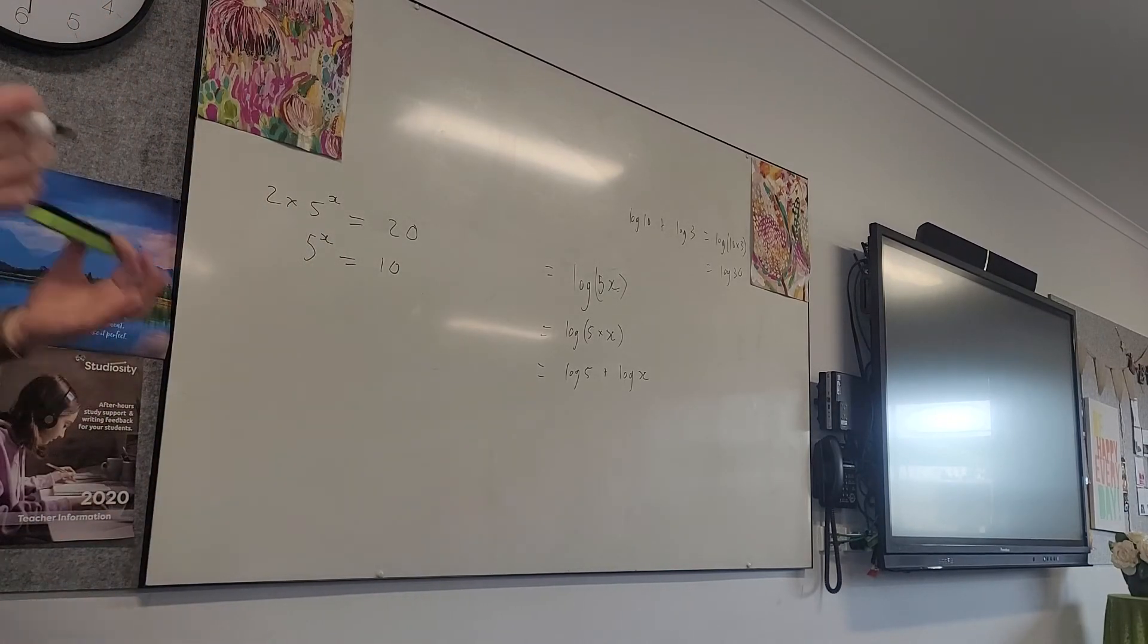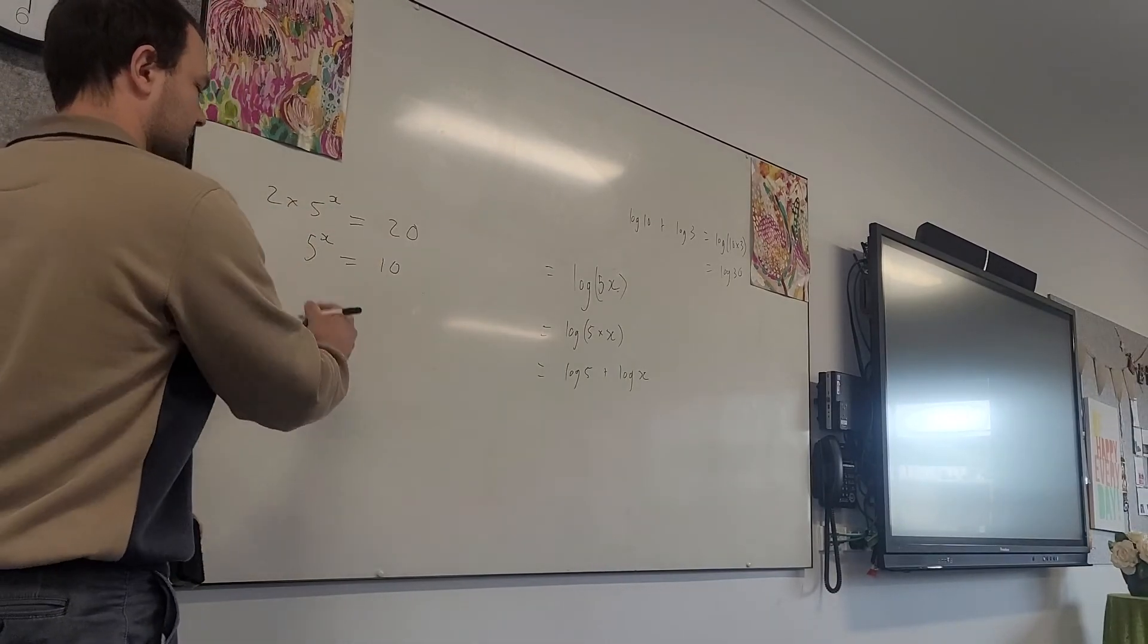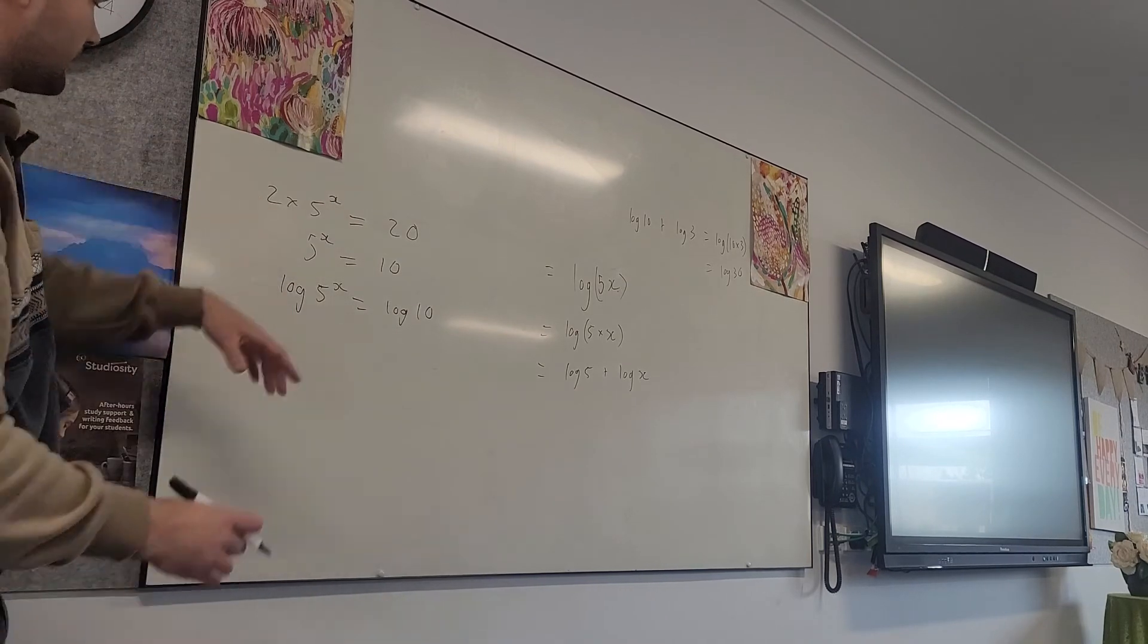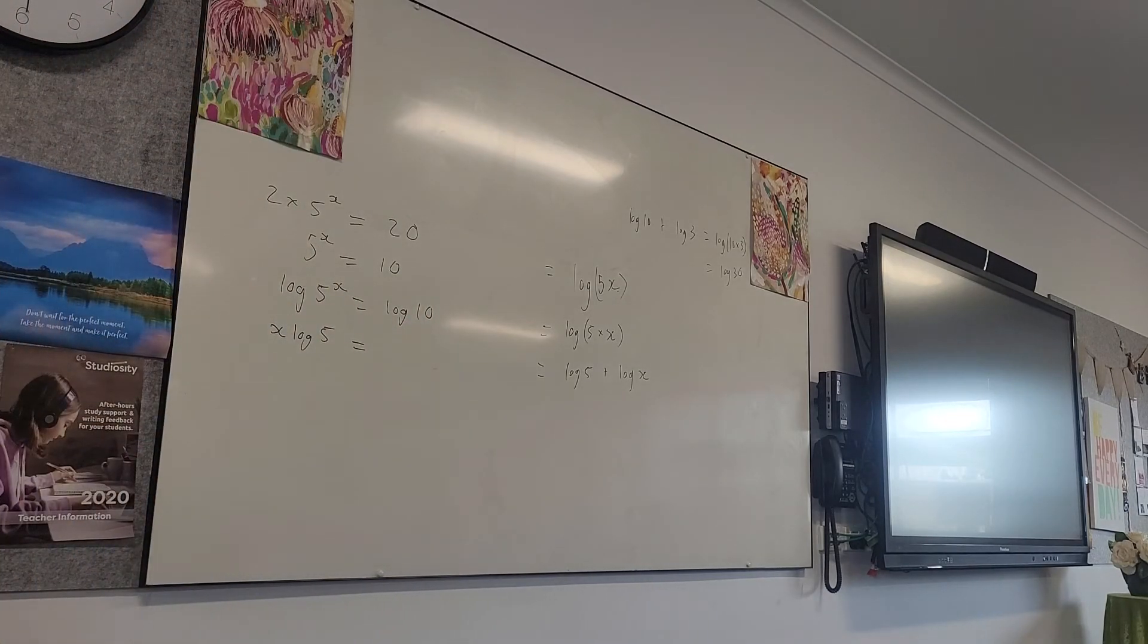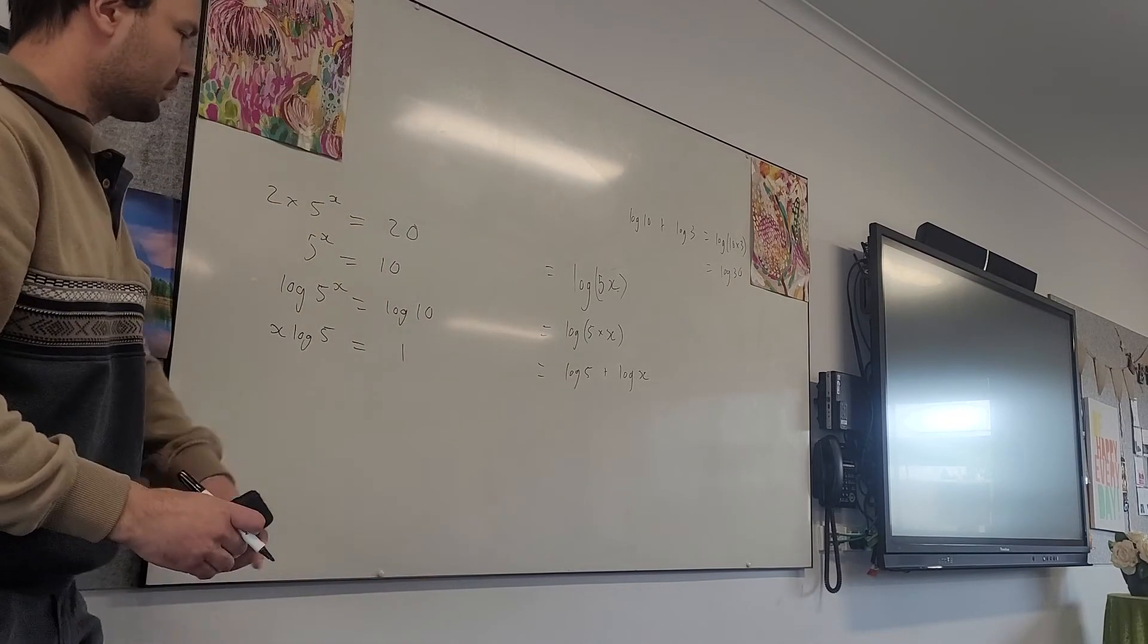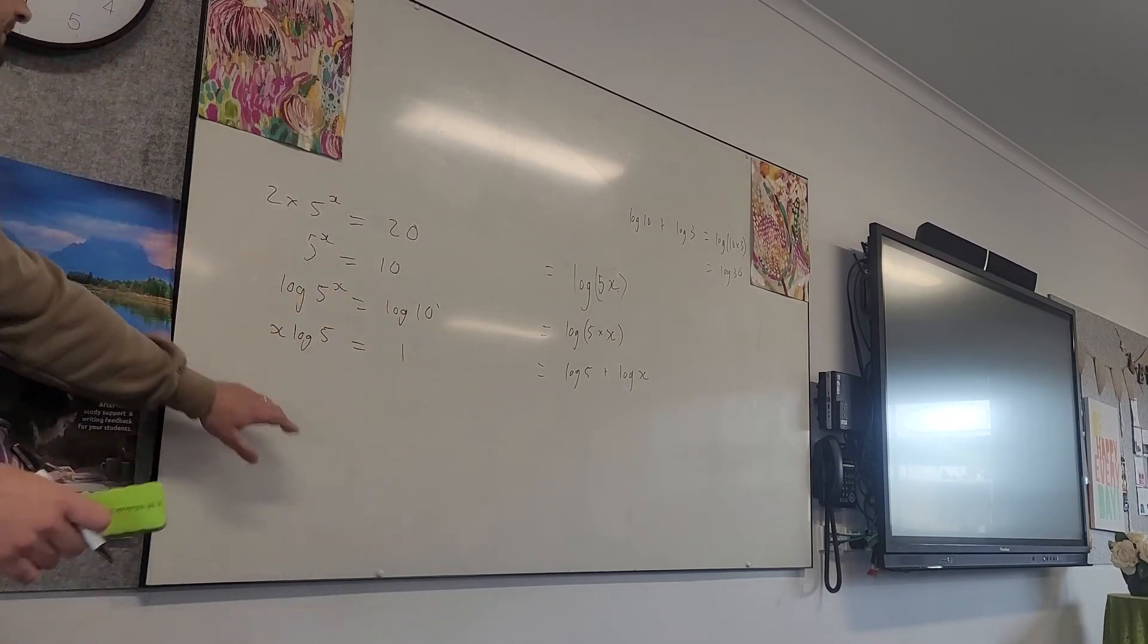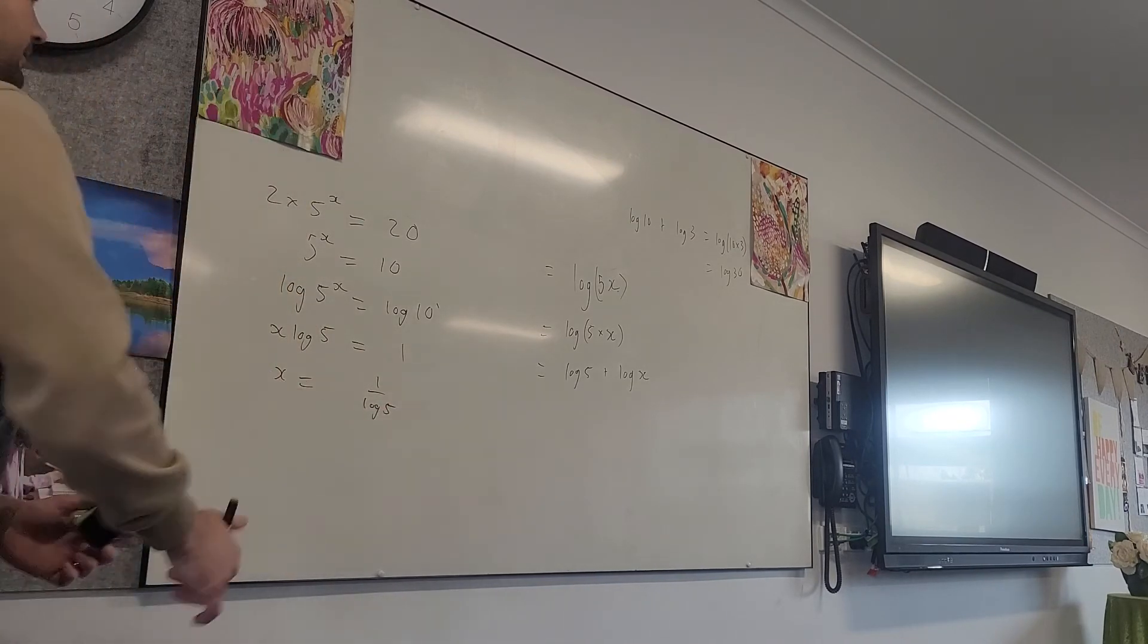And then once we've got it simplified like this, we can put a log on both sides. What's a log? It's like a function or like a square root. So we've got log 5 to the x equals log 10. That means this x can come straight out the front. So we're going to have x log 5. That's why we do this equals log 10. What is log 10? 1. Spot on, Brad. Log 10 is 1. It's a logarithm in base 10. 10 by itself is 10 to the power of 1. So we can simplify it to 1. We could leave it as log 10, but let's get in the habit of recognizing those points. And so then we've got x is going to be 1 on the top of log 5. And we move on the other side. And we've successfully isolated x.